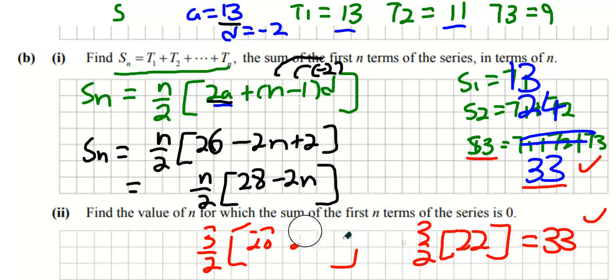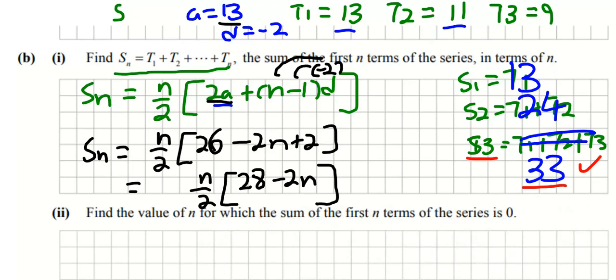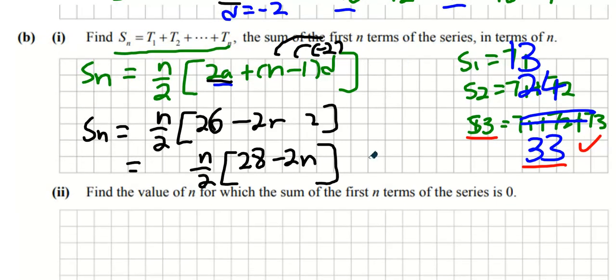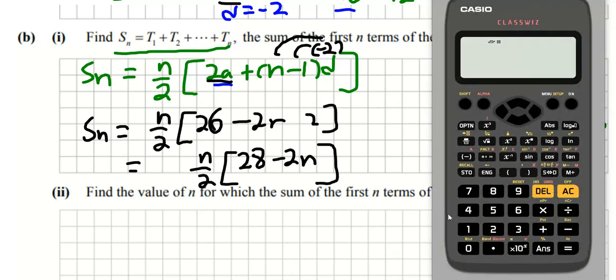Okay, next thing, find the value of n for which the sum of the first n terms of the series is 0. So remember what we said earlier, this formula here...